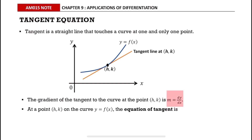The equation of tangent is given by y minus k equals m multiplied by x minus h, where m is the gradient of the tangent and (h, k) is the coordinate of the point.